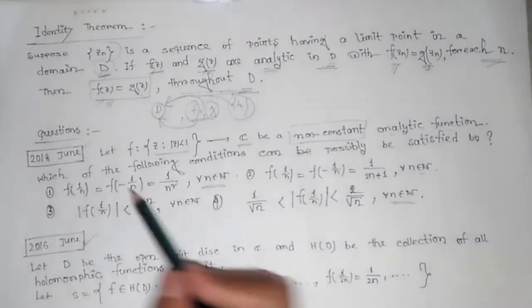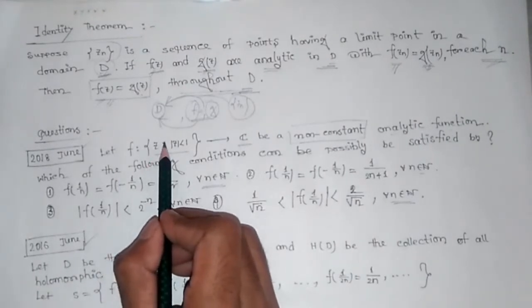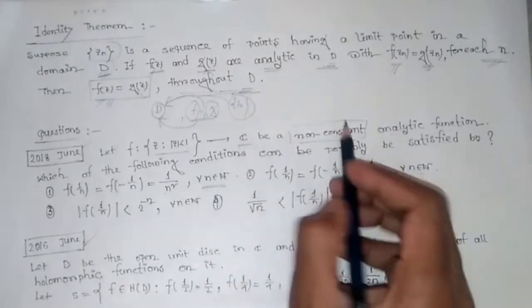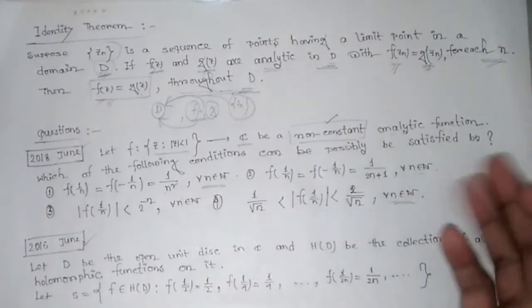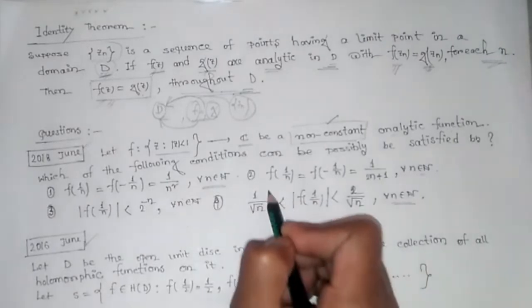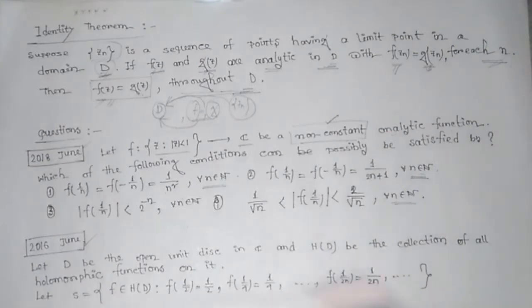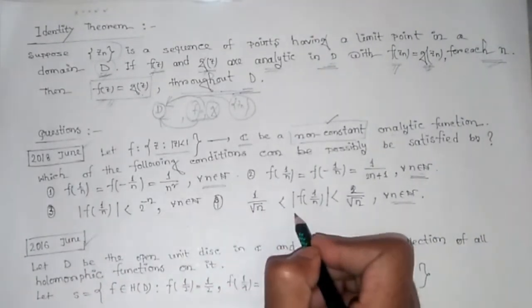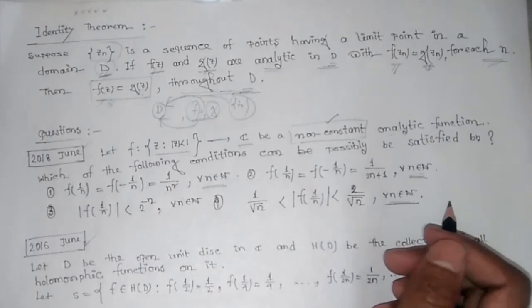Now we solve this question. Let f from the open unit disk — the set |z| < 1 — to ℂ be a non-constant analytic function. Which of the following can possibly be satisfied? Option 1: f(1/n) = f(-1/n) = 1/n² for all n ∈ ℕ. Option 2: f(1/n) = f(-1/n) = 1/(2n+1) for all n ∈ ℕ. Option 3: |f(1/n)| < 2^(-n). Option 4: 1/√n < |f(1/√n)| < 2/√n for all n.